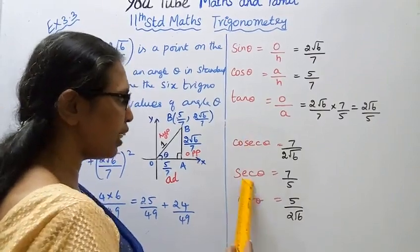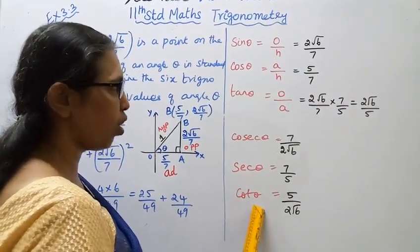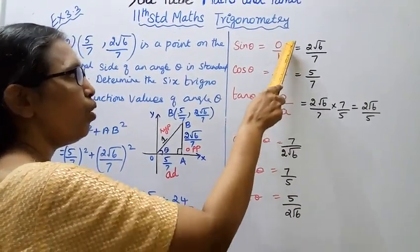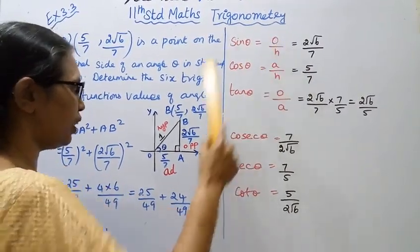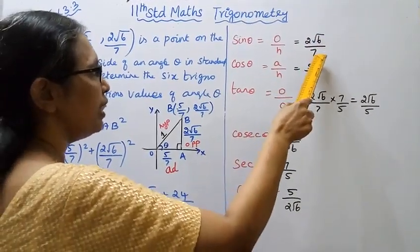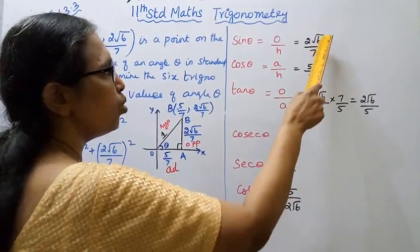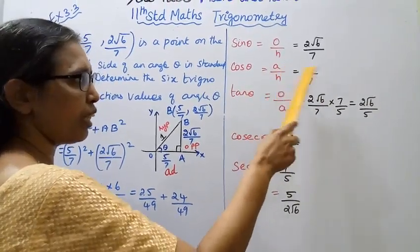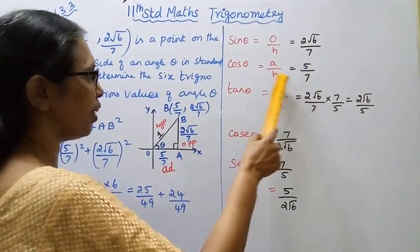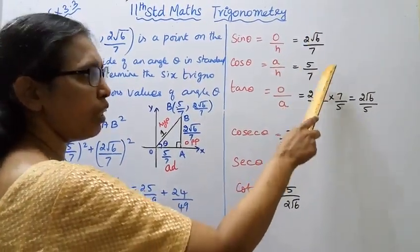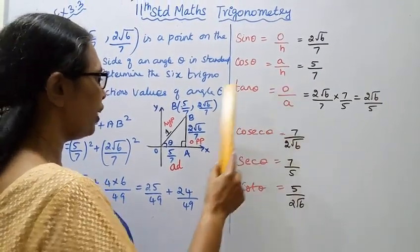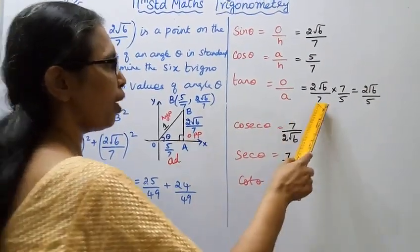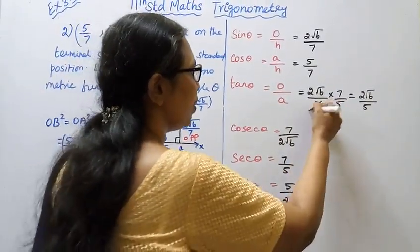Now we calculate the six trigonometric functions. Sin theta equals opposite over hypotenuse, which is (2√6/7)/1 = 2√6/7. Cos theta equals adjacent over hypotenuse, which is (5/7)/1 = 5/7. Tan theta equals opposite over adjacent: (2√6/7) ÷ (5/7). Multiplying by the reciprocal: (2√6/7) × (7/5) = 2√6/5.